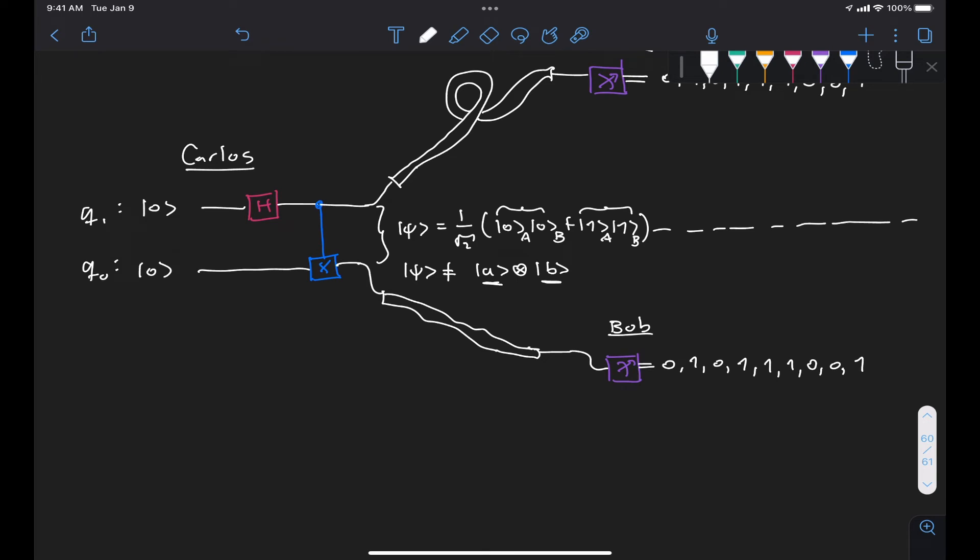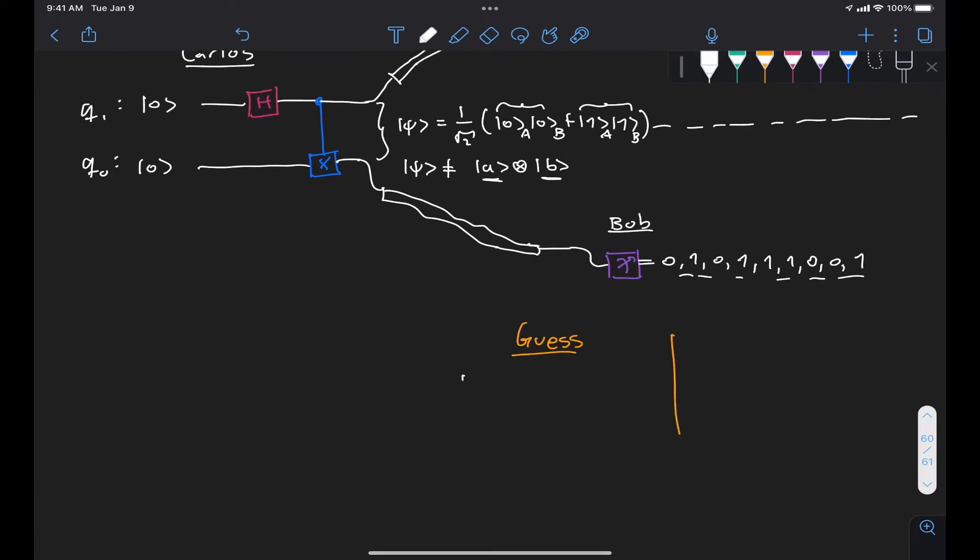So he performs these measurements and he looks at the results and says, okay, I'm receiving state zero and state one with equal probability. So I can make a guess. He can guess that maybe he's receiving state plus, because state plus is an equal superposition of state zero and state one. And he can say, well, okay, so that's my guess. But how can I verify that this is the case?